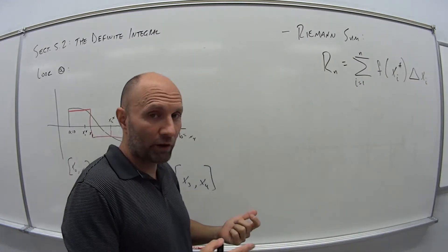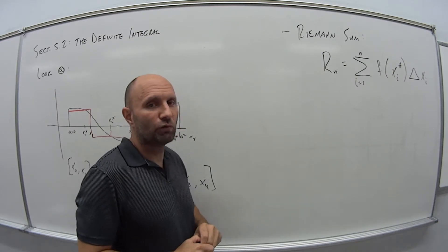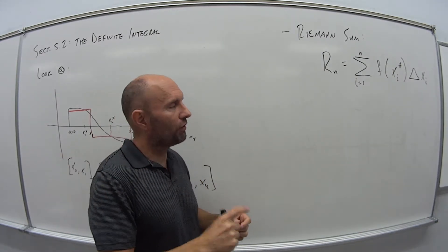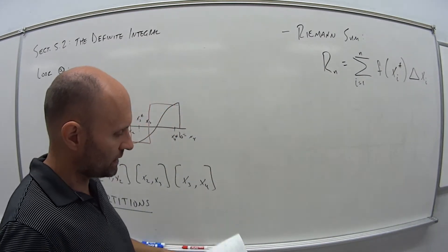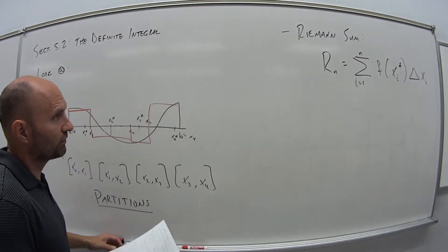But because these widths of the intervals could vary, we have to multiply it by just that interval width. Because it's not going to be constant. Remember the last example with the runner at the end of the 5-1 videos, all the intervals were a half, they were all the same. With the Riemann sum, they don't necessarily have to be.